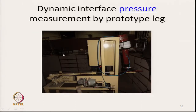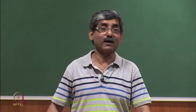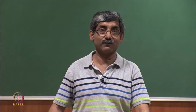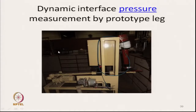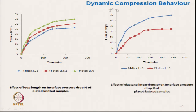This instrument measures the dynamic characteristics of pressure. We can wrap the bandage or garment on it, and the mannequin leg can move at different speeds. As it bends the knee, there is stretching and the garment exerts pressure. We used compression athletic wear in our case. The dynamic compression behaviour is shown with different fabrics — all knitted fabrics. The x-axis shows the time of test and the y-axis shows the percentage pressure drop.